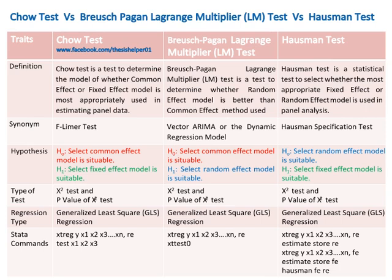The Chow test is also called the F-Limer test. The Breusch-Pagan Lagrange Multiplier (LM) test is also called Vector-Arema or the dynamic regression model. The Hausman test is also called the Hausman specification test. The null hypothesis of the Chow test is: select the common effect model is suitable.